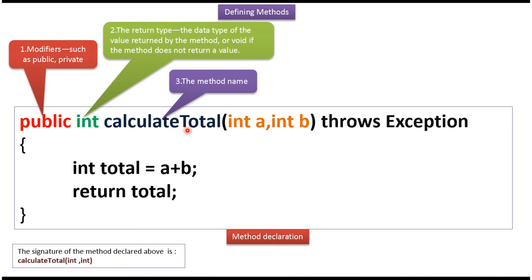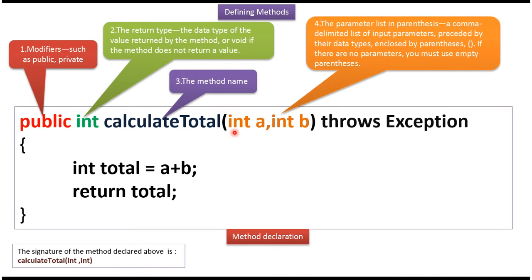Calculate total, this is the method name. Int a, int b, these are the parameters.